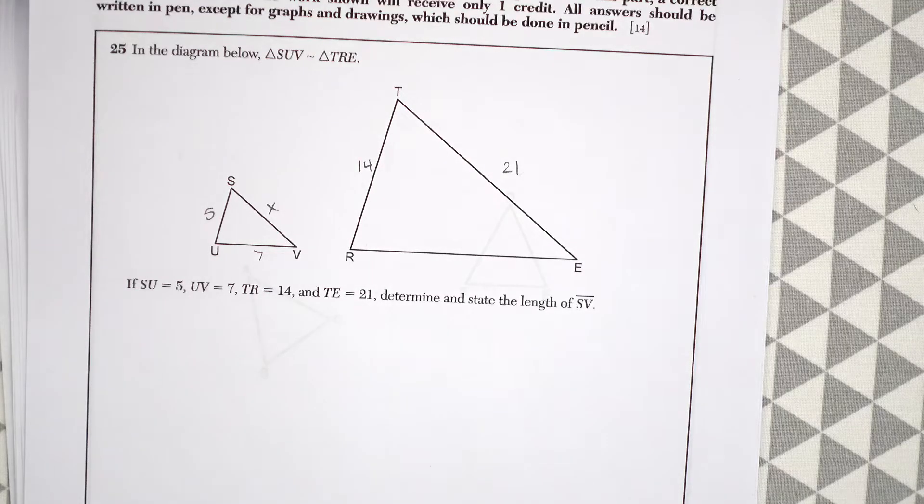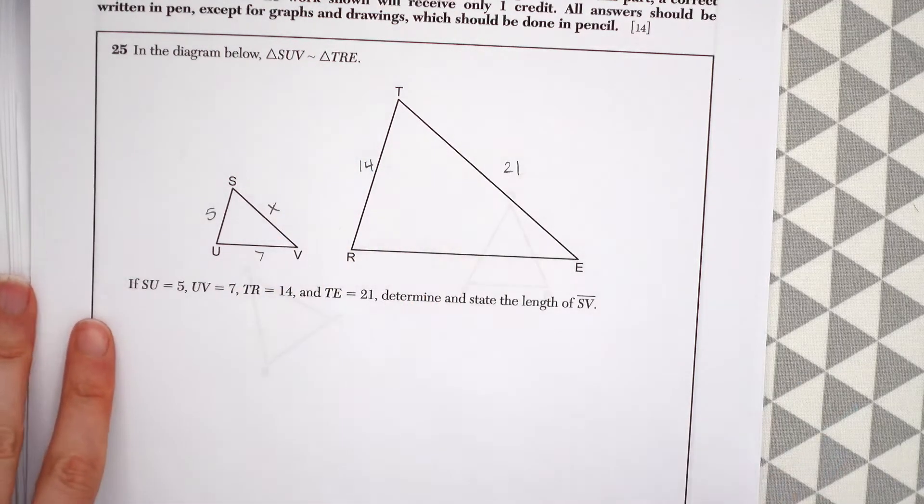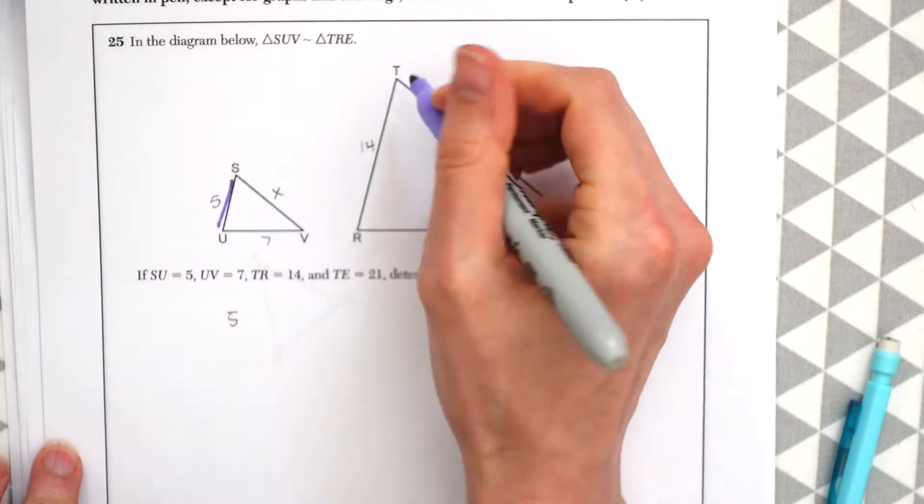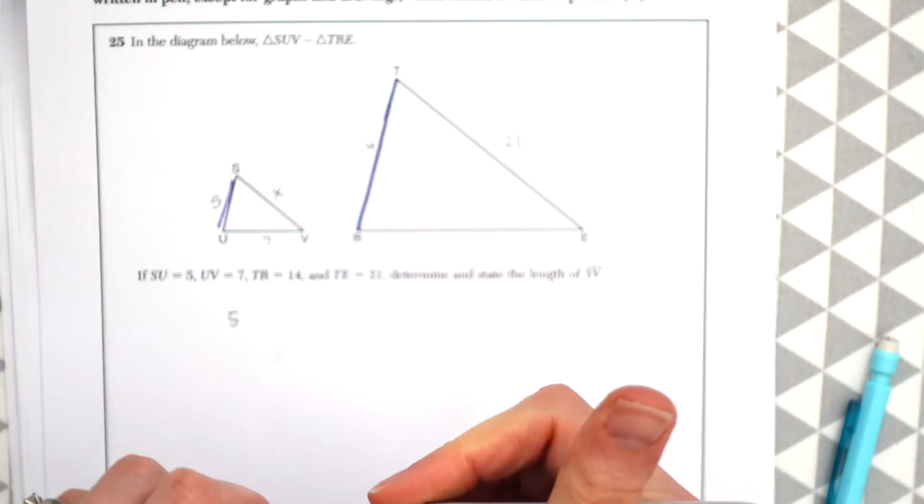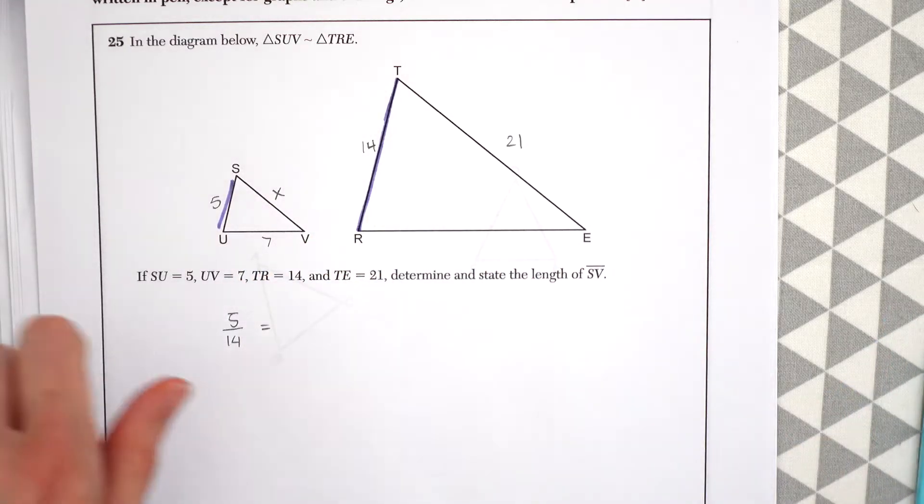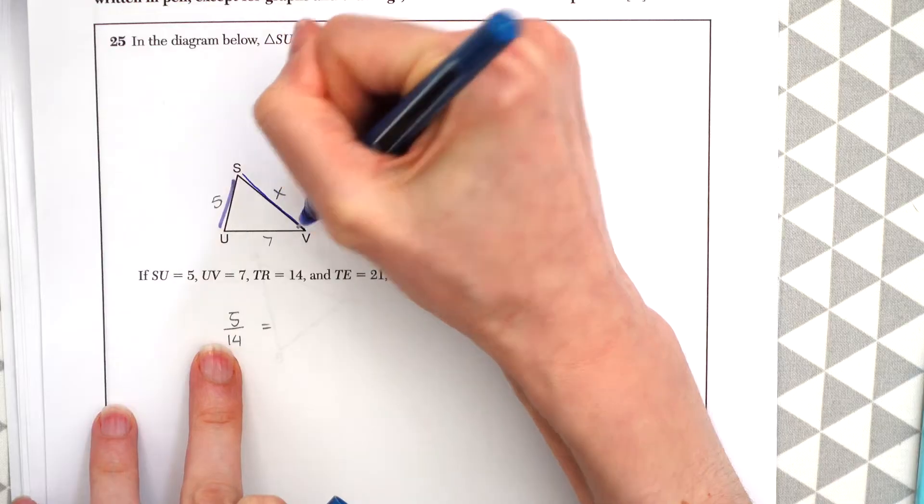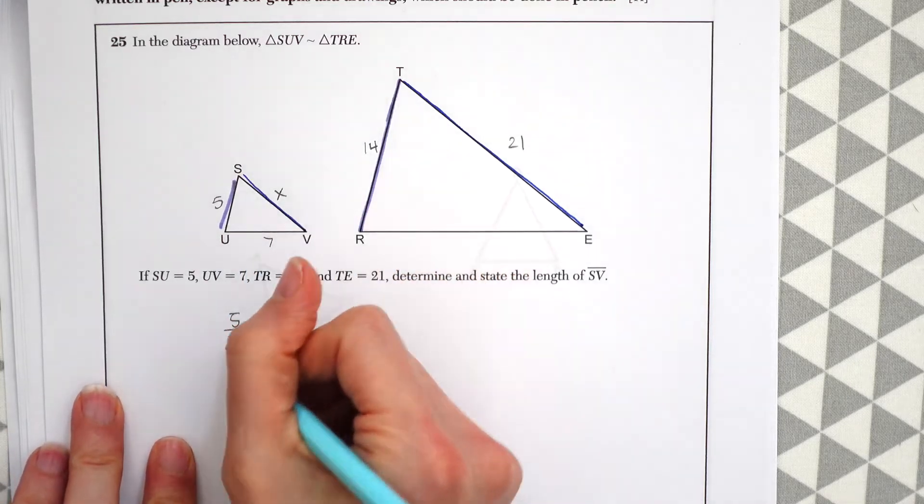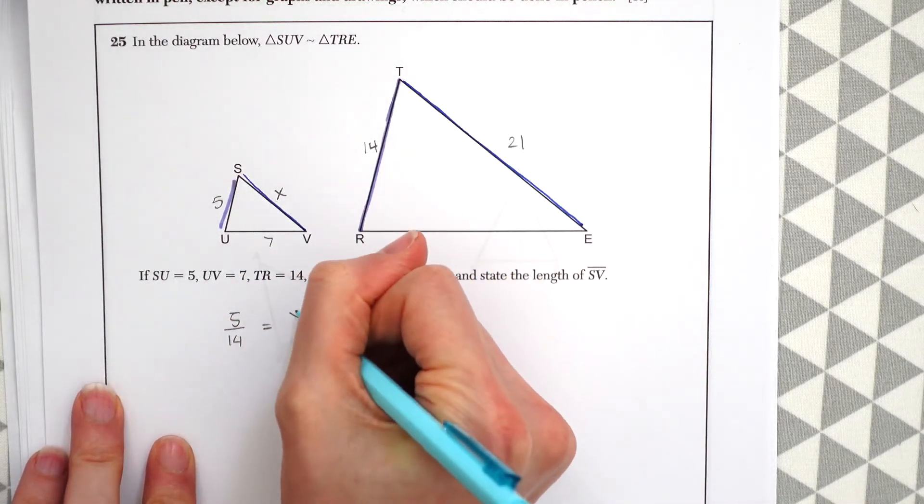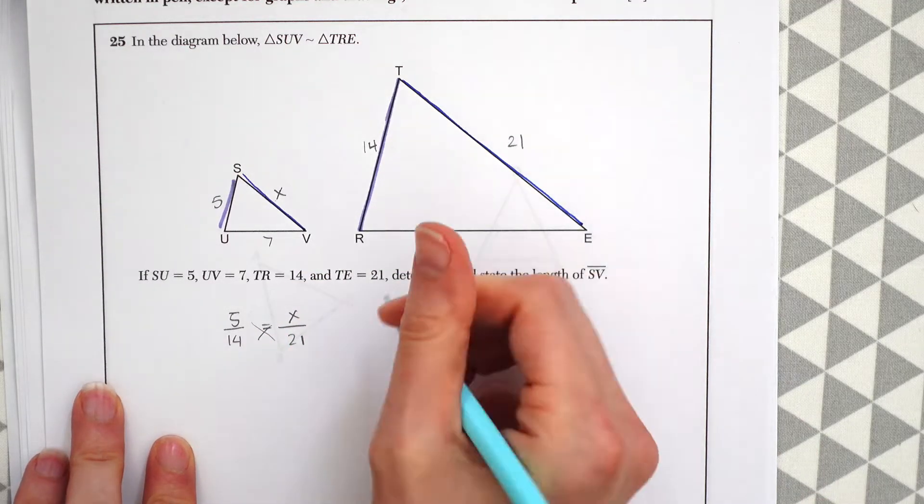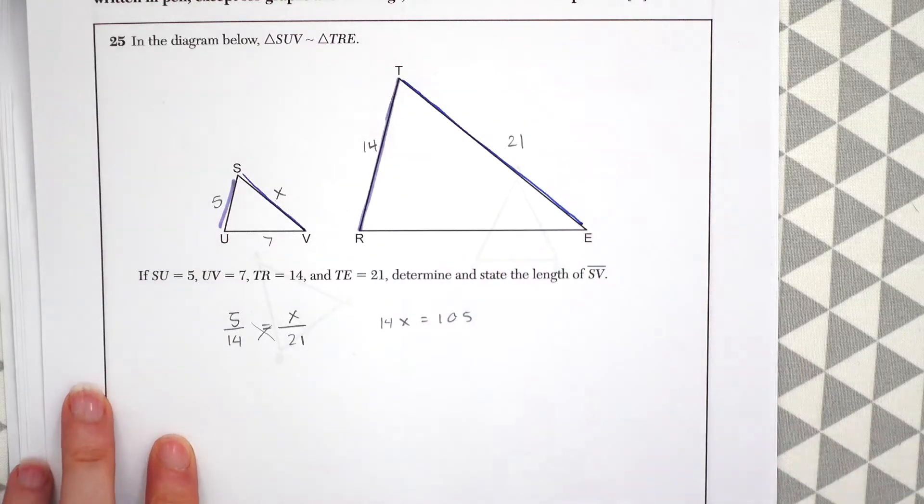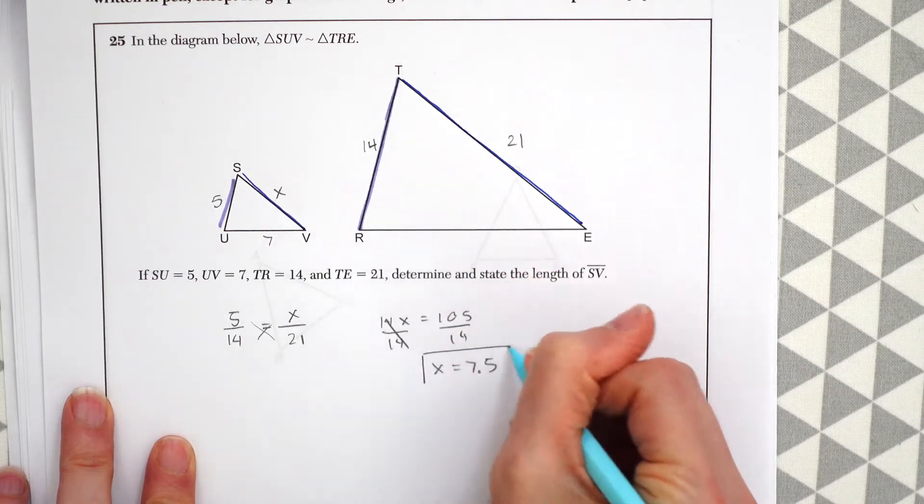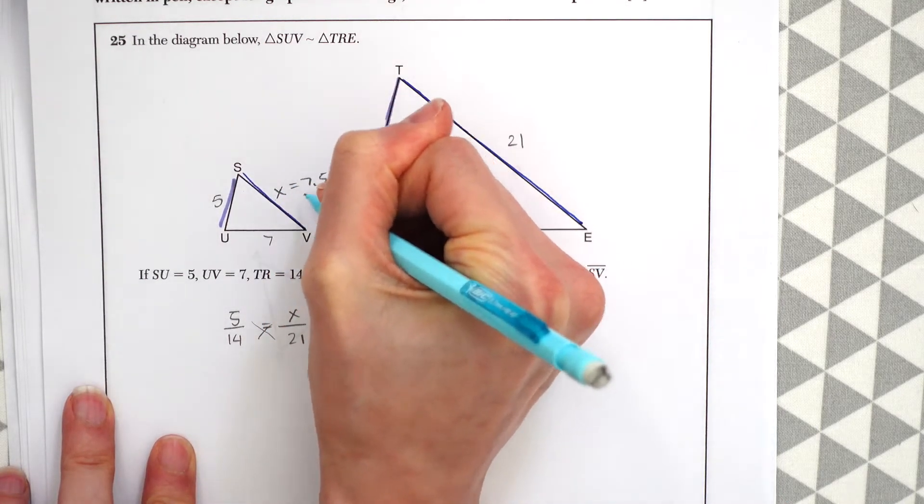So this question, nice and easy, since these triangles are similar, which they tell us up here, we can make a proportion. This side five, we could see that this side five is going to be in proportion to this side 14. So we can have five over 14 is equal to X over 21. And then we could just cross multiply. And we get X is equal to 7.5. So SV is equal to 7.5. And that's our answer.